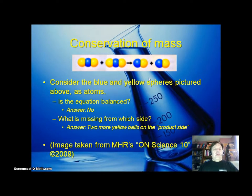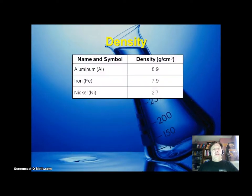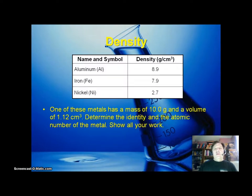That image was actually taken from textbook from grade 10. Now let's talk about density. Here we have three metals and they have three different densities measured in grams per centimeter cubed. One of these metals has a mass of 10 grams and a volume of 1.12 centimeters cubed. Determine the identity and atomic number of the metal. Show all your work.